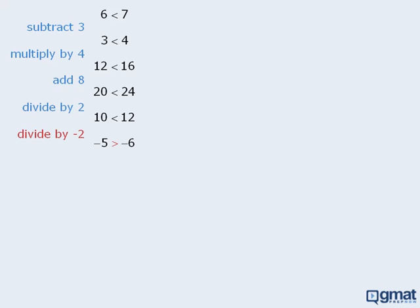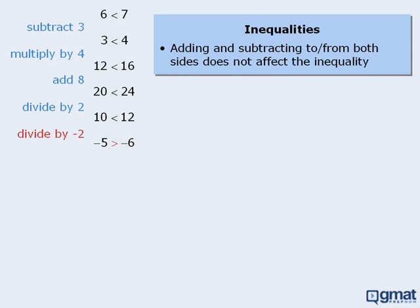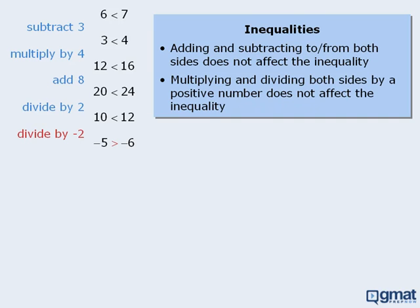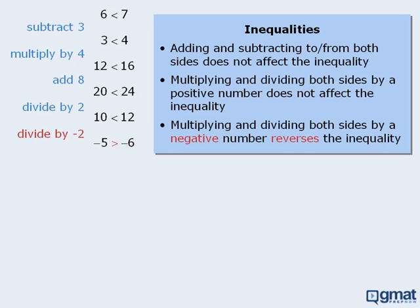From these observations, we can make some general conclusions about inequalities. First, adding and subtracting the same number to or from both sides does not affect the inequality. Second, multiplying and dividing both sides by a positive number does not affect the inequality. And finally, multiplying and dividing both sides by a negative number reverses the inequality. So if we perform the same operation on both sides, the inequality will remain intact — unless we multiply or divide both sides by a negative number, in which case we must reverse the direction of the inequality.